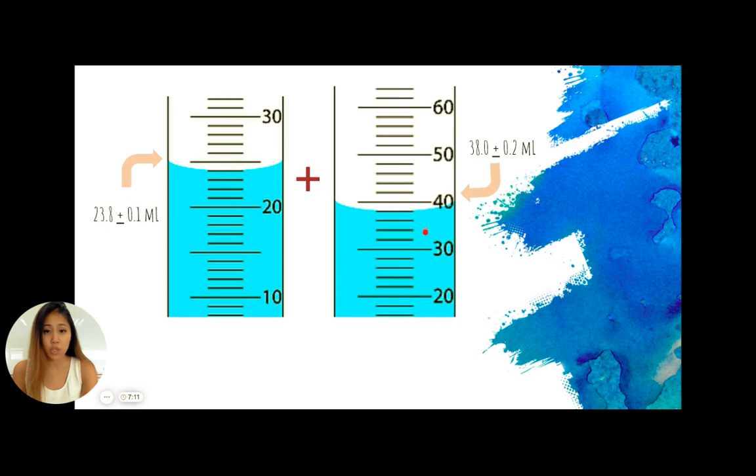This one is measured in 2 milliliters: 30, 32, 34, 36, 38, 40. These are the little indices that are given to us. Whereas on the left, for this graduated cylinder, we see that this one is given in 1: 20, 21, 22, 23, 24, 25, 26, 27, 28, 29, 30.